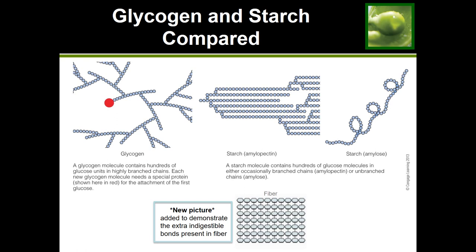Fiber is the last polysaccharide we haven't discussed yet. Fiber looks very much like the starch in the middle of the screen, with a bunch of strings lined up on top of each other. The difference is that fiber also has vertical bonds that hold each row of glucose units together. As humans, we don't have the enzymes necessary to break these different bonds that fiber has. Since we don't have the enzymes to break fiber's bonds, we actually can't digest it fully — and for this reason, we also can't absorb it. Fiber is not fully digestible in humans.